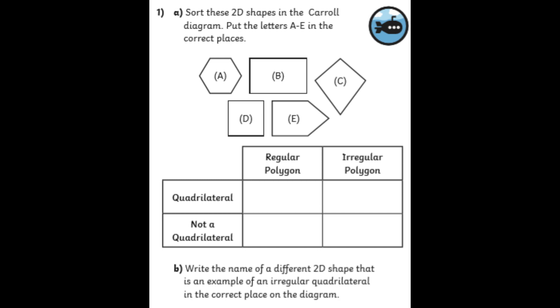And then, the second part of chilli one. Can you write the name of a different 2D shape that is an example of an irregular quadrilateral in the correct place on the diagram?